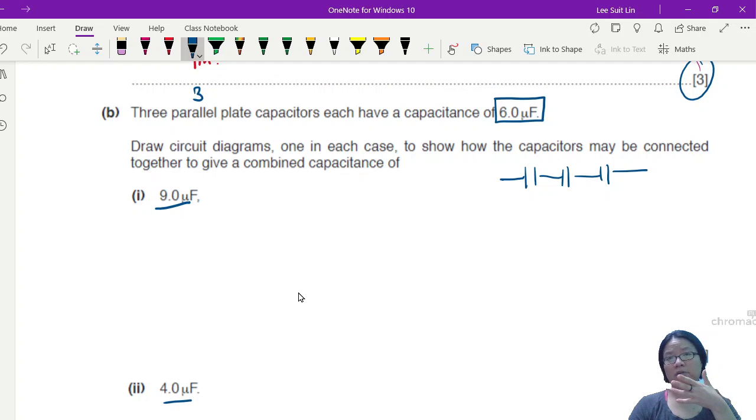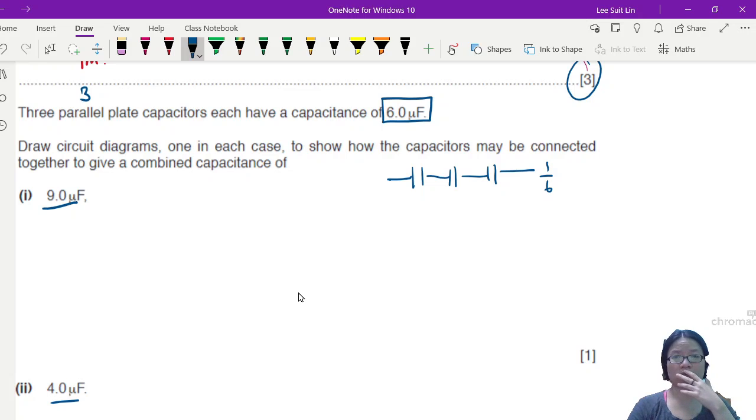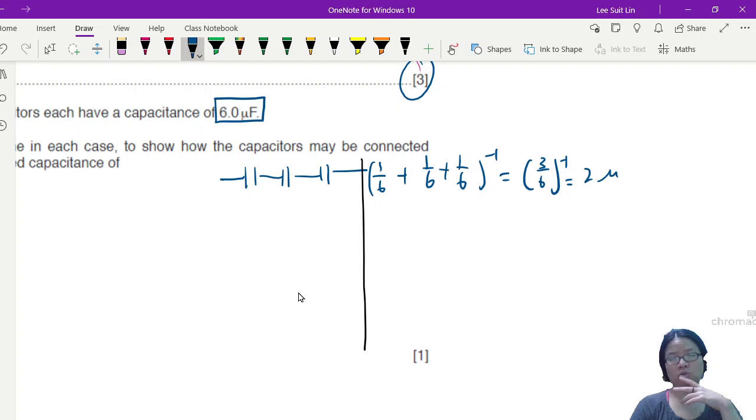Then this capacitance will be one over six. I'm just gonna draw here. I'm gonna do it such a way as if you have no hunch, so we're gonna just go on pure guessing. One over six plus one over six plus one over six, inverted. So this will be three over six inverted, which is two. This is two microfarad.